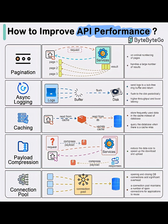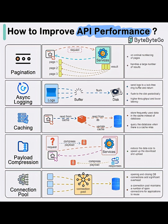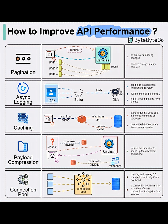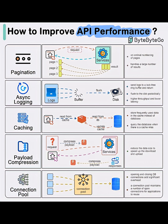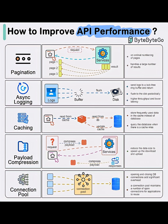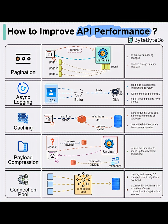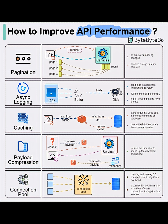3. Caching. Before hitting the database, the API checks if the data is already in the cache. If cached, it returns a fast response. If not, it fetches from the DB and updates the cache. This reduces database queries and latency.